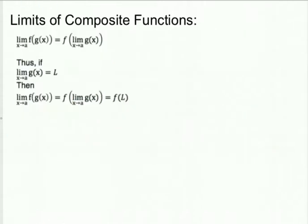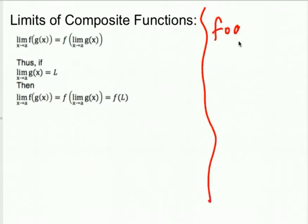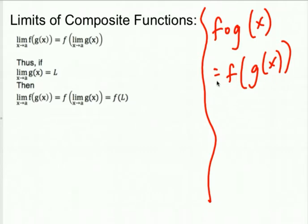Now let's talk about limits of composite functions. Remember from algebra, composite functions look like F of G of X — F outside with G on the inside. The limit as X approaches A of F of G of X is the same as F evaluated at whatever the limit as X approaches A of G of X is. So if G of X has some limit value L, then the limit as X approaches A of F of G of X equals F of L.